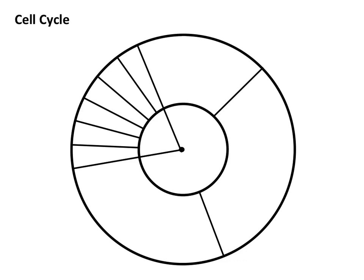Here's a picture that will help you visualize what's happening during the steps of the cell cycle. The bigger area represents interphase, and the smaller wedge is the mitotic phase. You might want to draw a little arrow to help remember the direction — the mitotic phase goes in one direction, and interphase goes in the other direction.